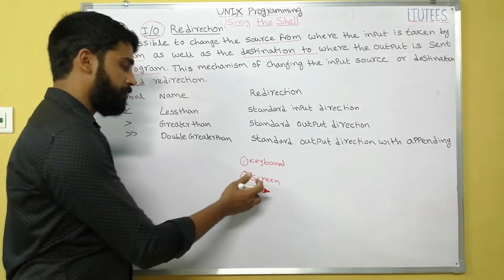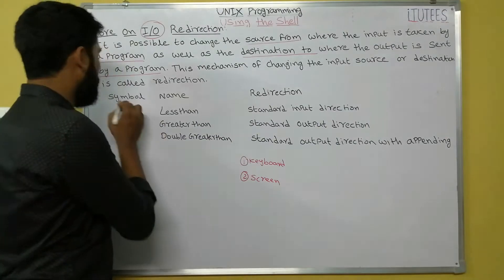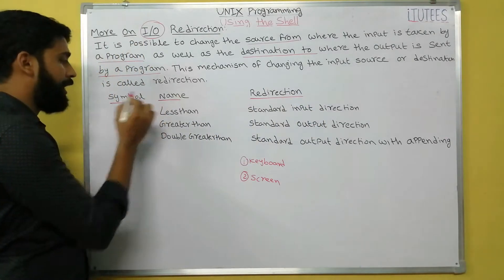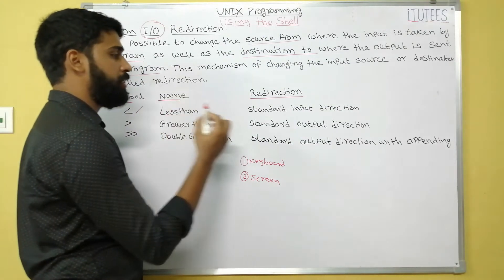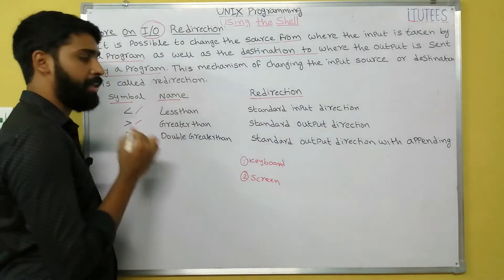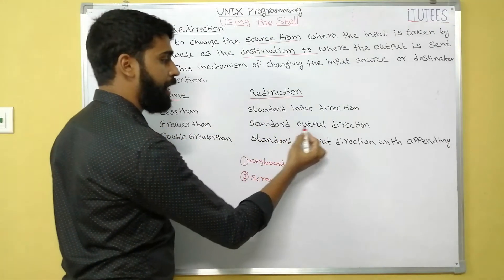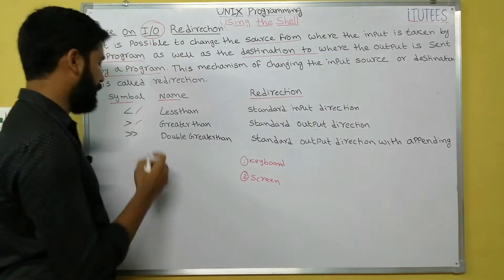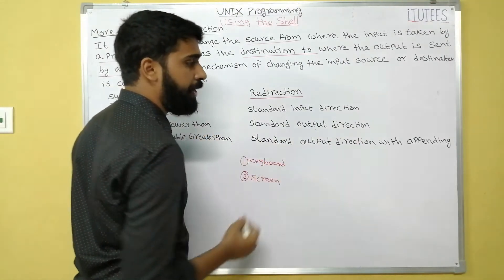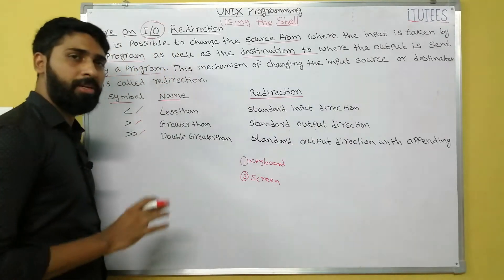There are three symbols. The first symbol is less-than `<`, which is for standard input redirection. Greater-than `>` is used for standard output redirection. Double greater-than `>>` is for standard output redirection with appending.